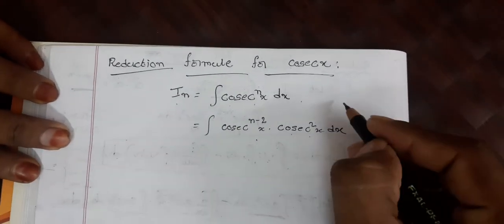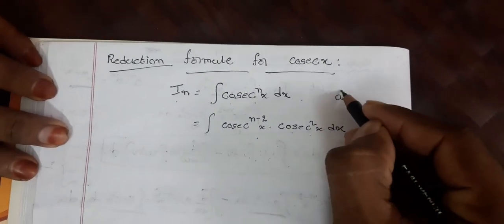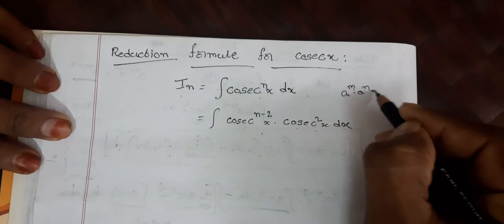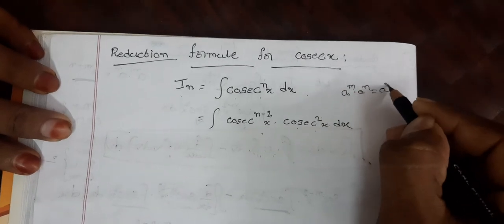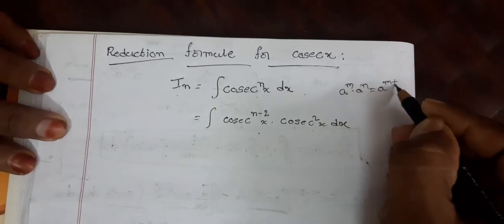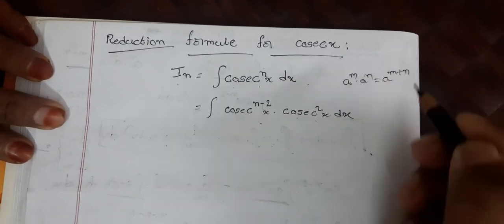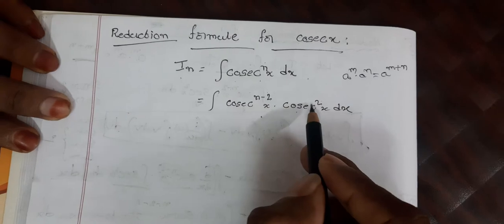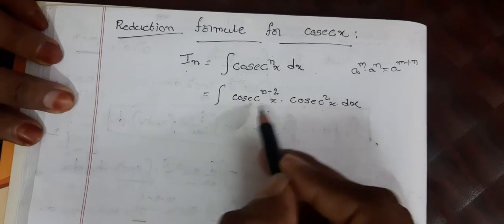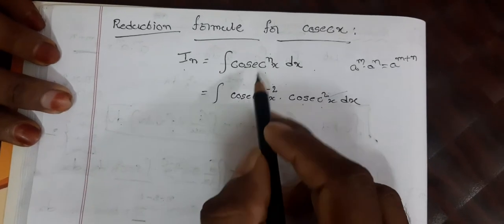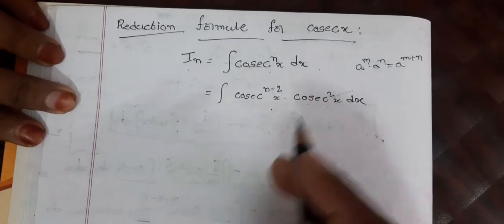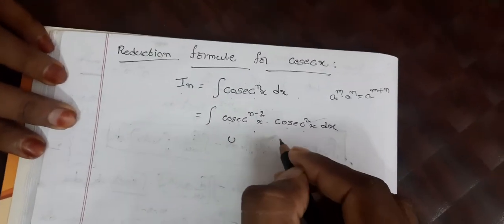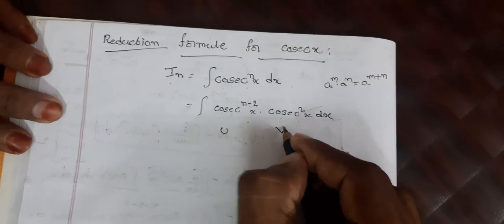Using the rule a^m · a^n = a^(m+n), cosecant^(n-2) · cosecant² = cosecant^(n-2+2) = cosecant^n. That checks out. Now we choose the first and second parts for integration by parts.